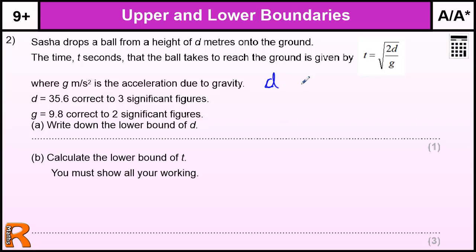If we have a look at D, D equals 35.6 to three significant figures, so that's between 35.5 and 35.7. So our boundaries for that degree of accuracy is going to be 35.55 and 35.65. And for G, which is going to be the next part of the question, that's 9.8 to two significant figures, so that's between 9.7 and 9.9. So that value there is going to be 9.75 and halfway between those two is 9.85. So those are our boundaries. The lower boundary of D is 35.55.